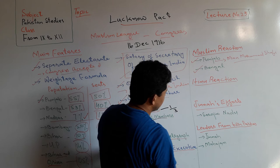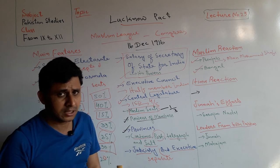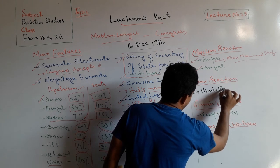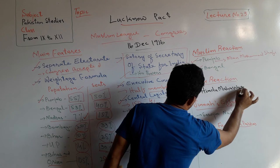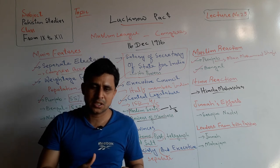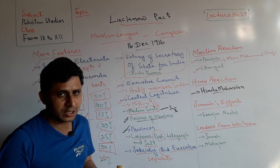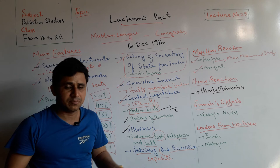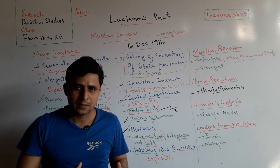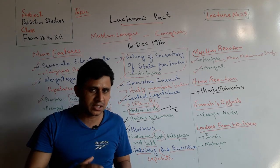Regarding Hindu reaction: many Hindu organizations were also against the Lucknow Pact, such as the Hindu Mahasaba, which was an extremist party. It was against Muslims and the Muslim League political party. That is why it rejected the Lucknow Pact — because Congress had accepted separate electorate for Muslims and given them certain other rights.